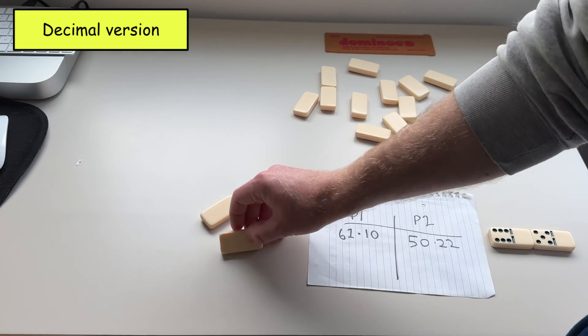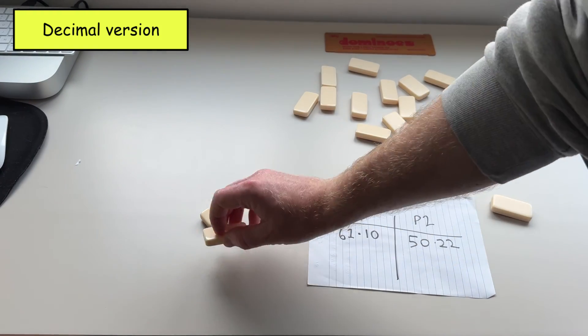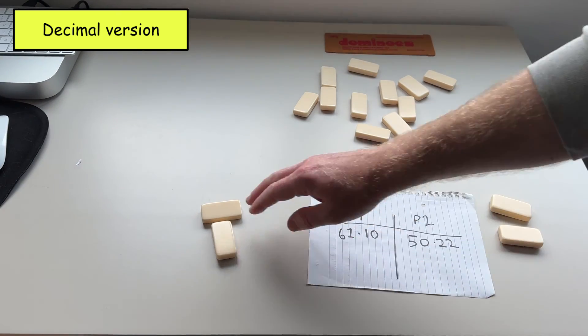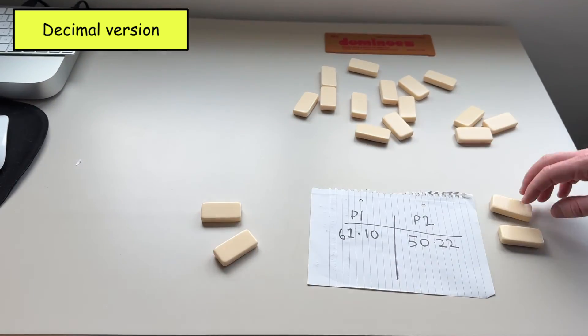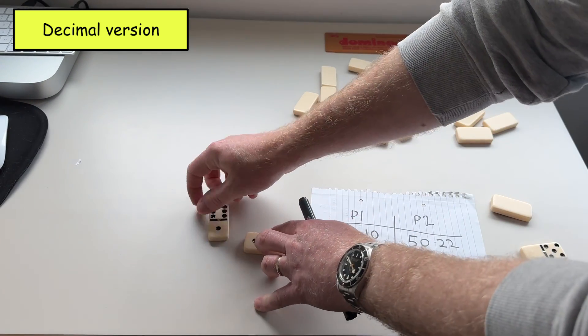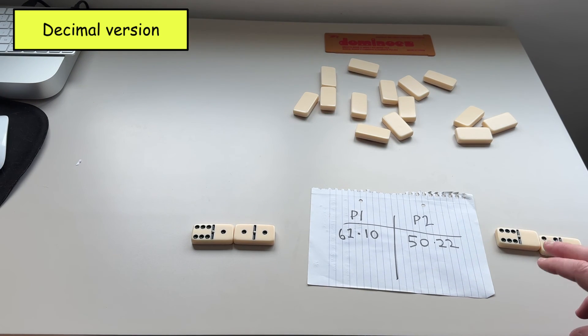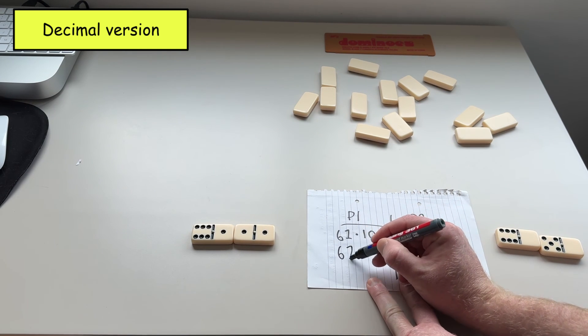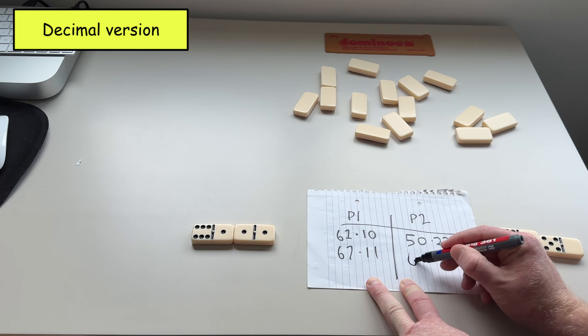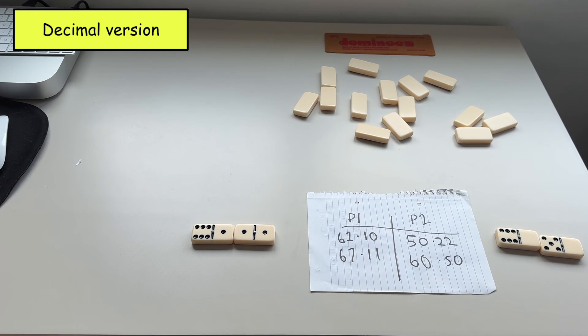And then the third stage of the game would be to decide to steal or keep. This player here would probably go and steal one of the dominoes off this player and then this player would mix them up and this player would try and steal it back probably. And then at the end of the game you would see who has the highest number. And that would be player one here with 61.11. And this player has 60.50. That would be a point for player one.